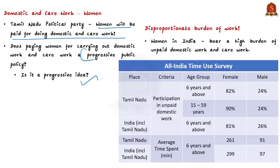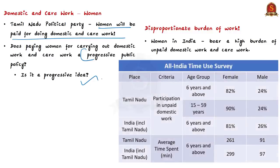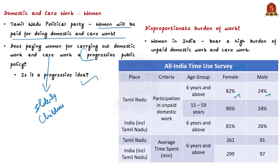On the face of it, paying women for domestic work looks like a progressive idea, but a closer scrutiny suggests a different picture. This is because in India, women bear a disproportionately high burden of unpaid domestic work and care work — caring for the elderly and the children in the family. The All India Time Use Survey says that in the age group of 6 years and above, 82% of females as against 24% of males from Tamil Nadu participate in unpaid domestic work.